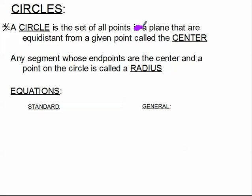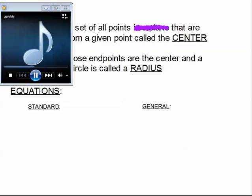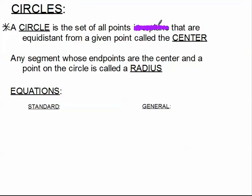If we remove the words 'in a plane' from our definition — if we just say the set of all points that are equidistant from a given point called the center — we'd be talking about a sphere. If we do not restrict ourselves to the plane and we're talking about three dimensions, the set of all points equidistant from a center would be a sphere. But in this chapter we are restricting ourselves to a plane.